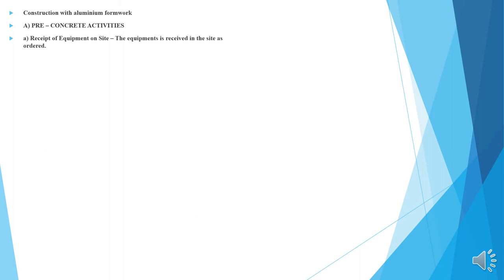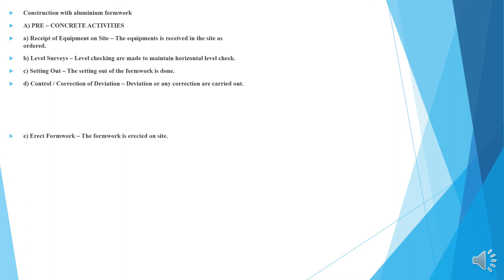Pre-construction activities: Receipt of equipment on site, the equipment's received on site as ordered. Level surveys: level checking are made to maintain the horizontal level check. Setting out: setting out the formwork has been done. Control correction or deviation: deviation or any correction has to be carried out. Erect formwork: the formwork erected on site.